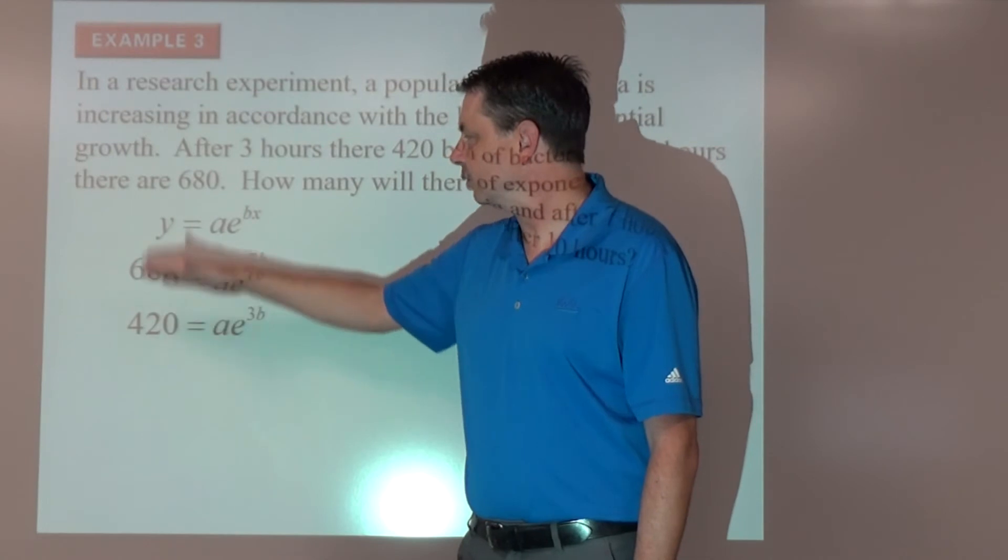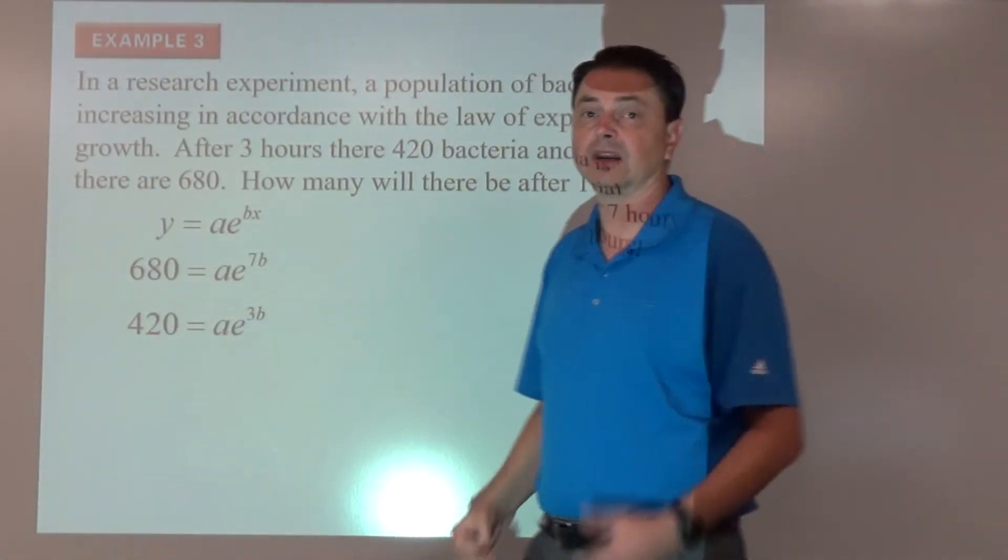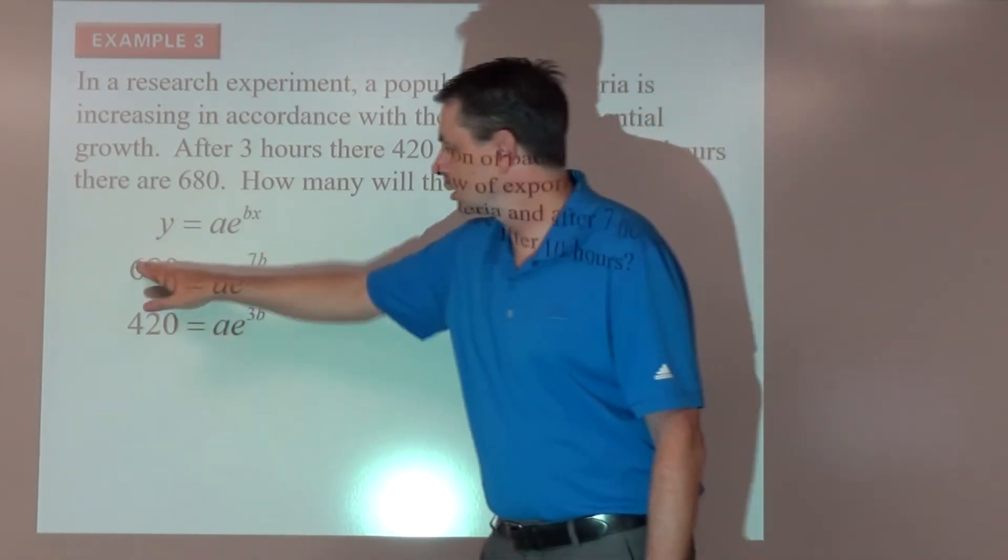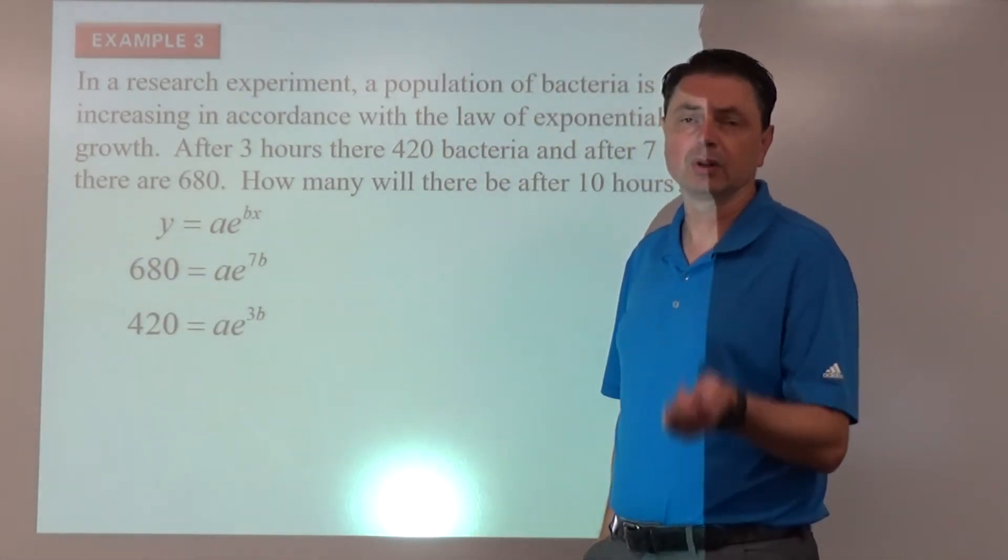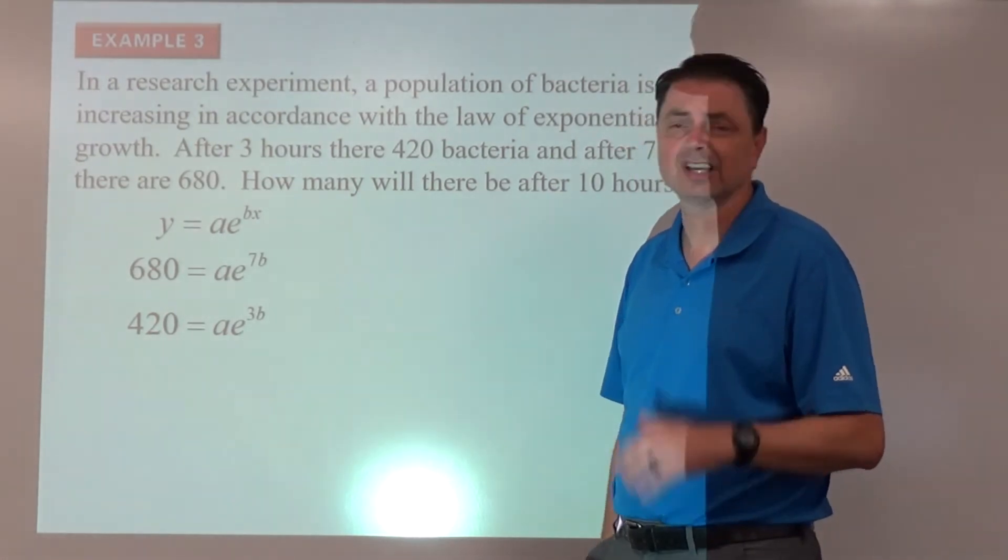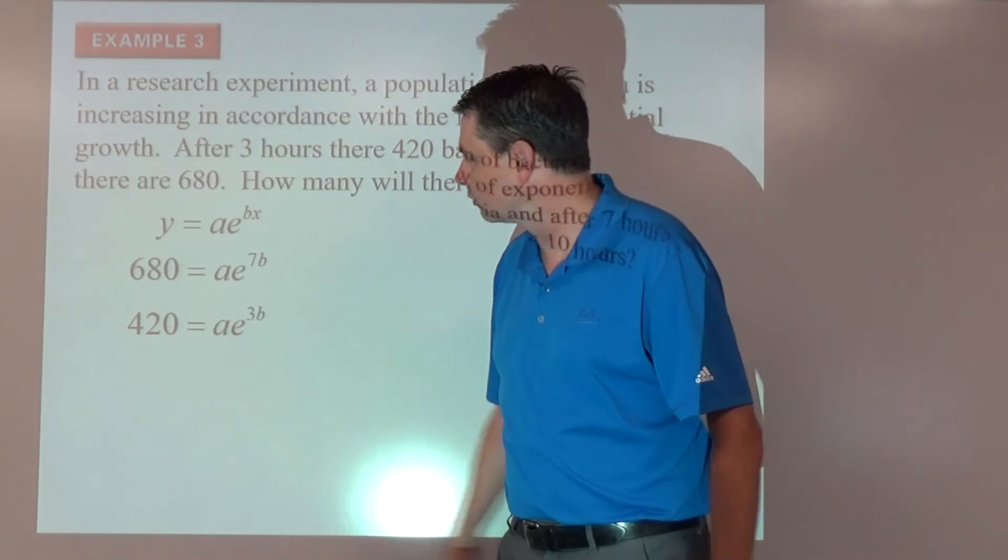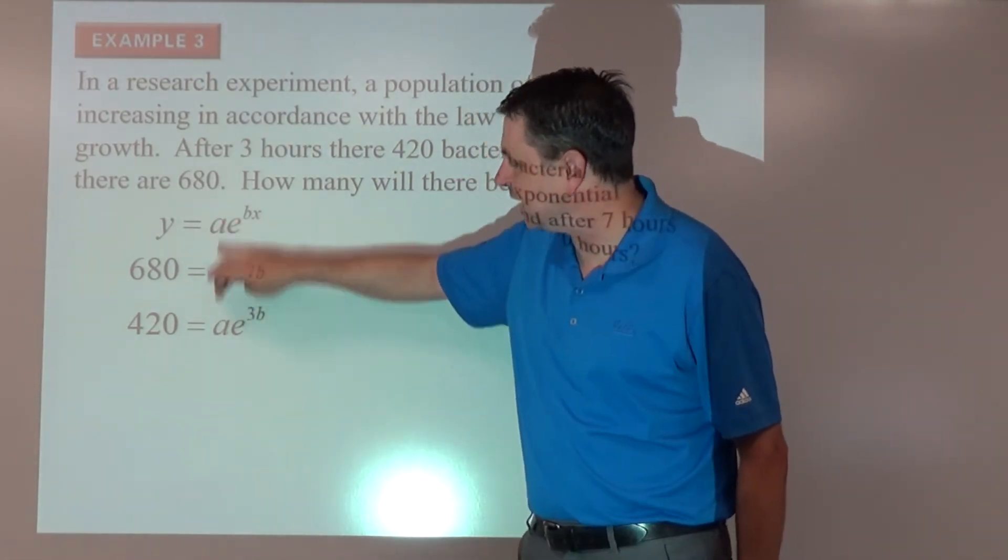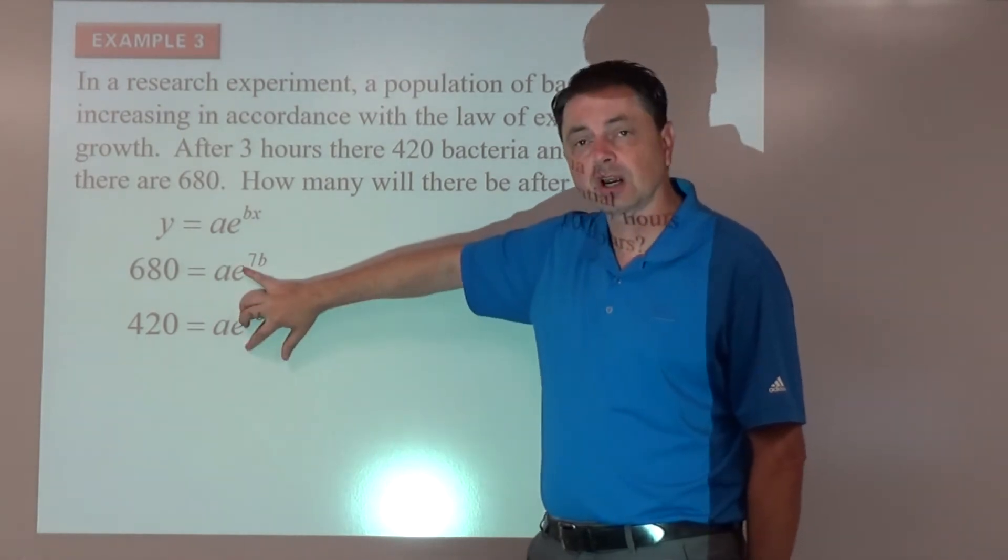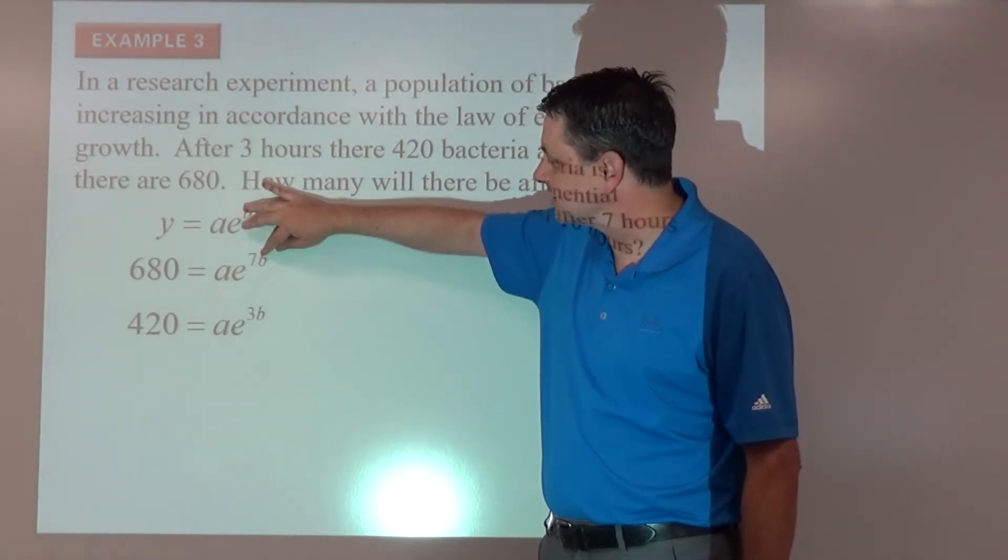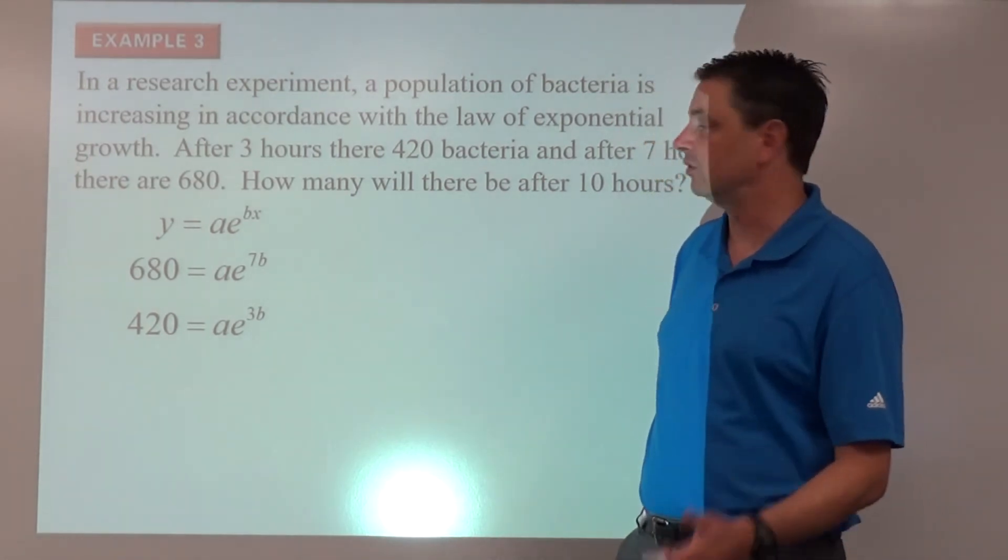Because then what we're going to do with these two equations is we're going to divide the two equations. Since they're equal to each other, if we just take the top one and divide by the bottom one, we should still get a true equation. So 680 divided by 420, get an exact value there, so probably want to write that as a fraction. It doesn't really technically need to be reduced too much. And then if we divide over on the right side, a divided by a cancels because it becomes one. And using our exponent properties, e to the 7b divided by e to the 3b will be e to the 4b.